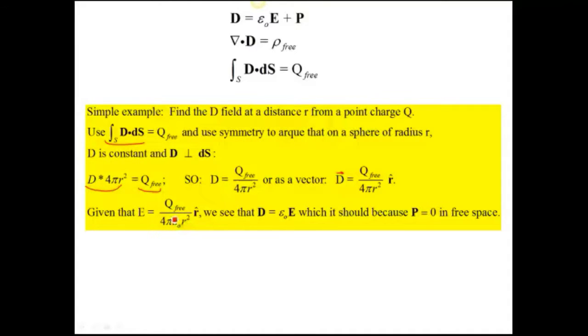So comparing the E and the D, we see that D is equal to epsilon zero E. This is what it should be, because P is equal to zero. So come up here, look at D. If we're going to end up with this, P has to be zero. And that's the case, because we're in free space.